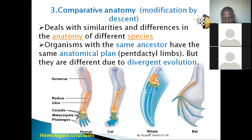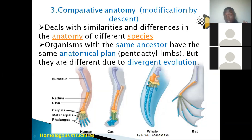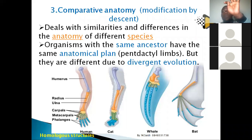Even a whale, which looks very different on the outside, has five digits when you look at its internal anatomy. A cow also has five, though some are fused. A chicken has five as well — three in front, one behind, and one on top. This shows a line of common ancestry.